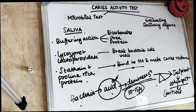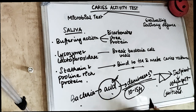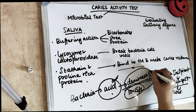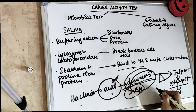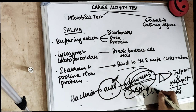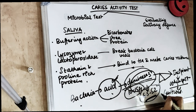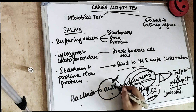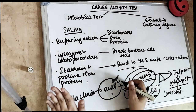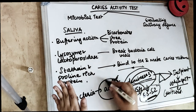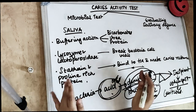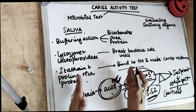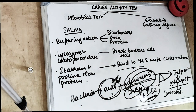The critical pH for demineralization of enamel is 5.5 to 5.2. We will be studying pH values in certain tests. Remember: the more acidic the pH is, the greater is the activity of caries occurring in the oral cavity.